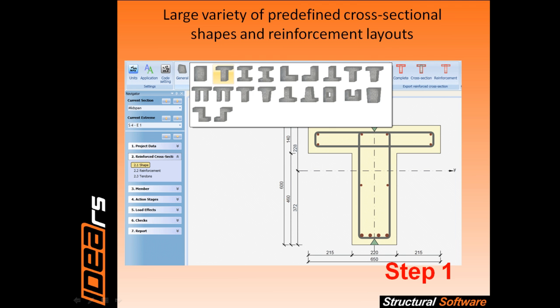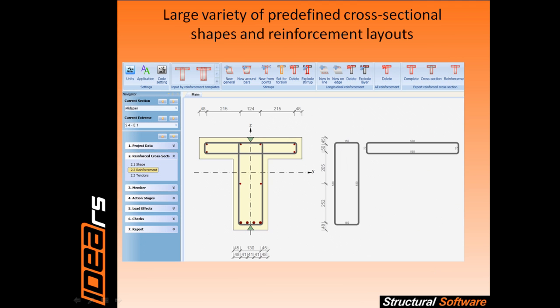Step 1 is the input of the cross-section. Besides the possibility to define a general shape of cross-section, a large variety of predefined cross-sectional shapes and reinforcement layouts is available. We select the shape of the cross-section and concrete grade in Step 1.